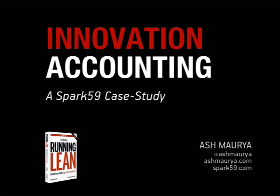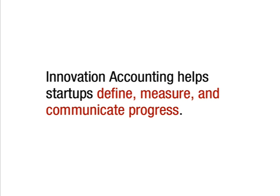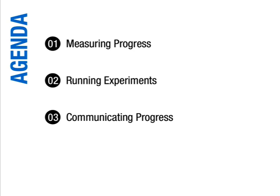Hi, this is Ash with Spark 59. If you've been following Lean Startup for a while, you've probably heard of actionable metrics, cohorts, and even innovation accounting. Today I'm going to provide a high-level overview of what innovation accounting means to us and how we put it to practice at Spark 59. This talk will be organized around three topics, and I'll be using a case study from one of our products, Lean Canvas, to illustrate the underlying principles.